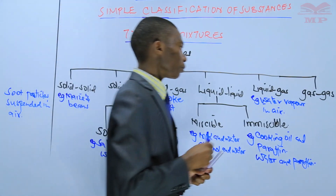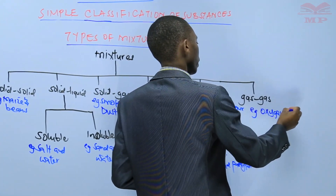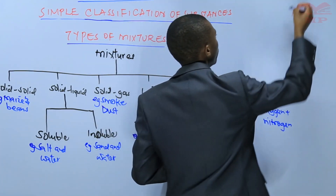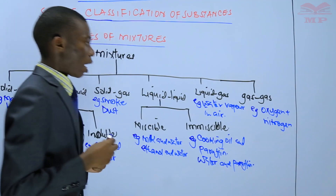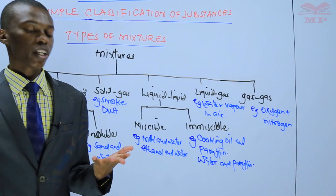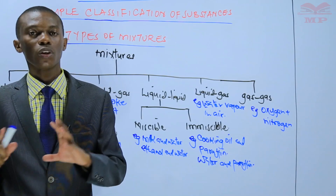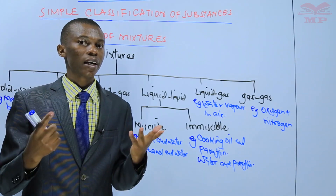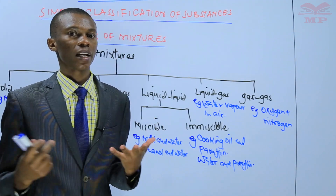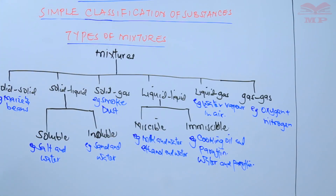Lastly, for the gas-gas mixture, an example is oxygen and nitrogen together in air. Air is a mixture of gases including oxygen, nitrogen, carbon dioxide, neon, argon, and krypton — all gases mixed together, making air a gas-gas mixture.